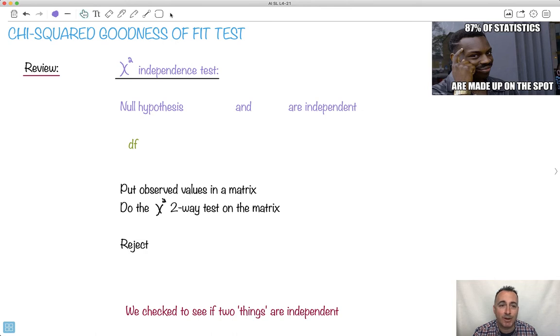I want to talk to you about the chi-squared goodness-of-fit test. I like this, 87% of statistics are made up on the spot.